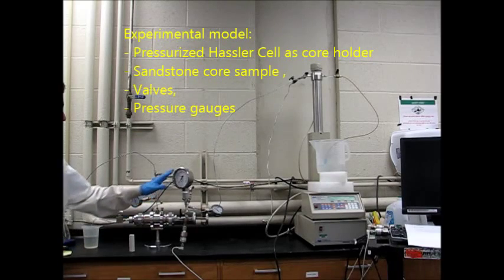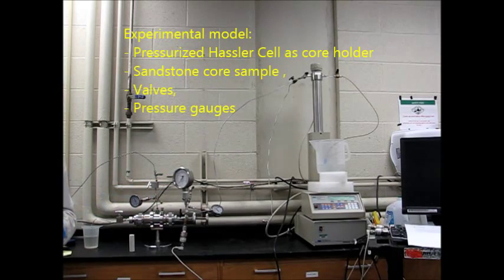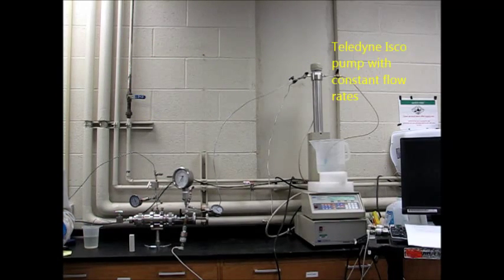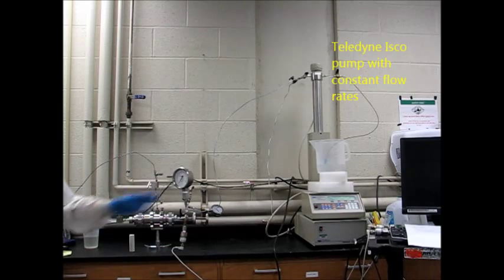and pressure gauges to measure the inlet and outlet pressure, and an ISCO pump with a constant flow rate to measure the flow rate coming from the pump.